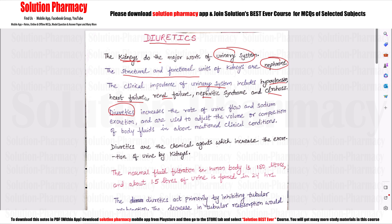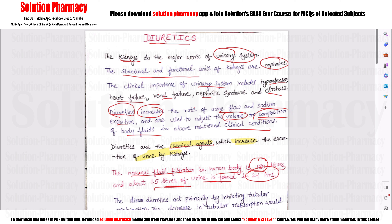Diuretics are chemical agents which can increase the urine flow, promote sodium excretion, and also adjust the volume or composition of body fluids according to the clinical condition. Diuretics are medicinal substances that increase the urine output and increase the normal fluid filtration in the human body, which is around 180 liters, producing approximately 1.5 liters of urine excreted out in 24 hours.